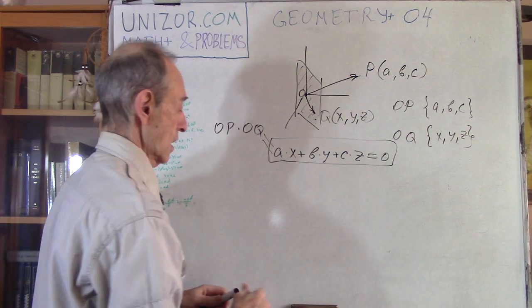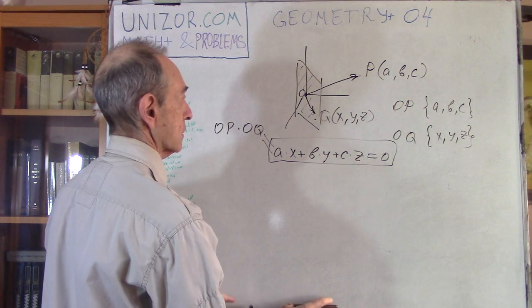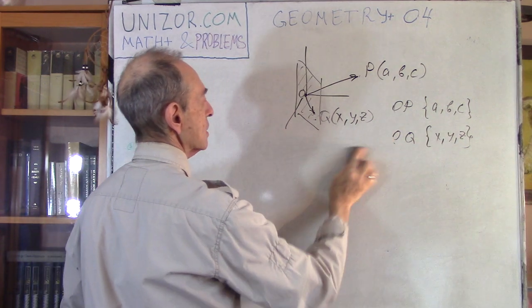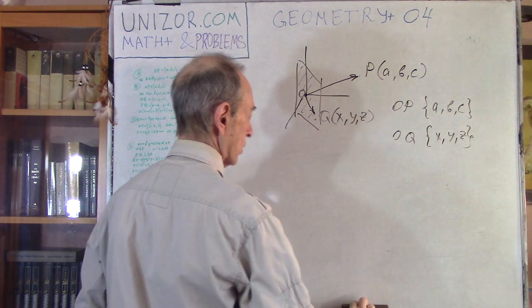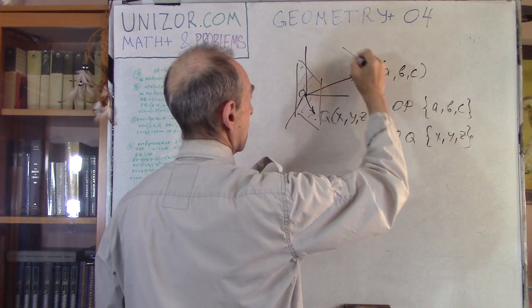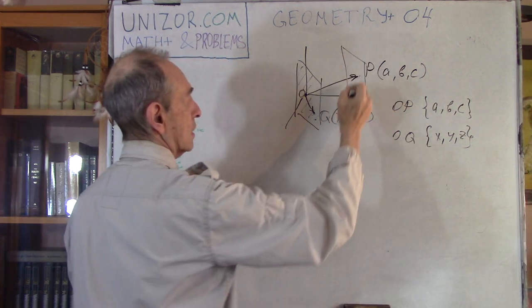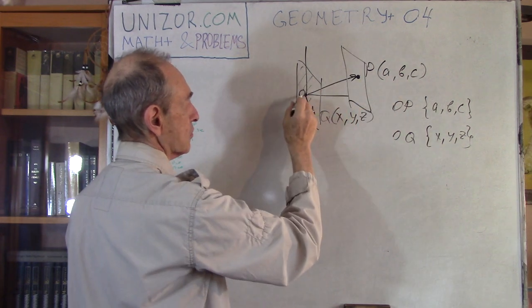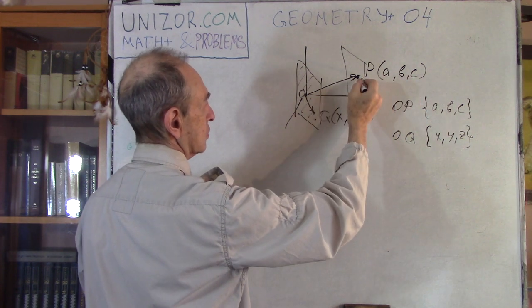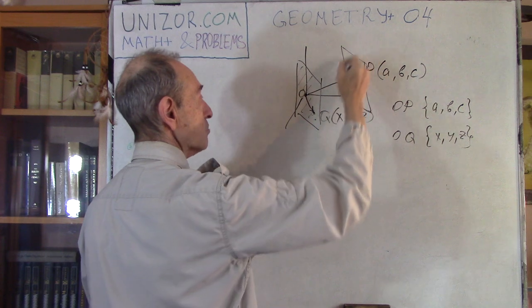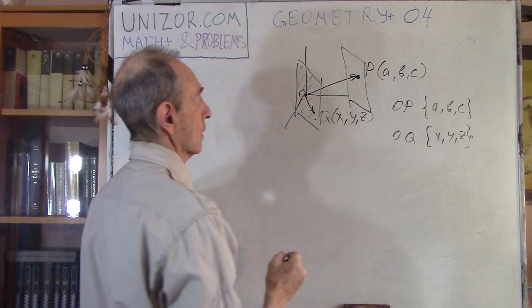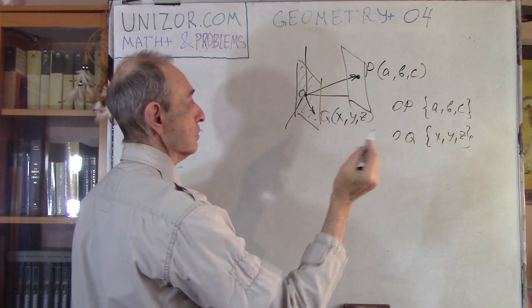Next problem. We will do this slightly differently — it's the same problem, but we don't want the plane to go through the origin of coordinates. Instead, we want the plane to go through the far end of vector OP, so point ABC belongs to this plane whose equation we want to know.